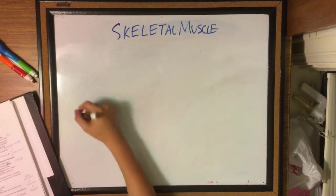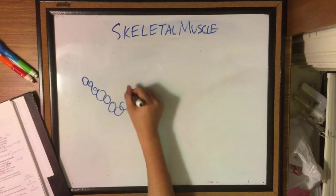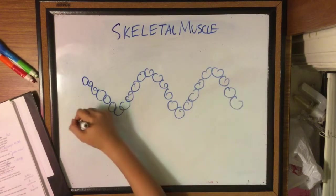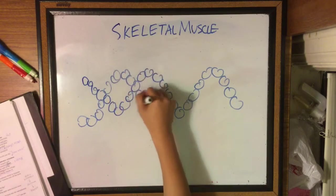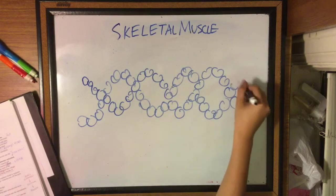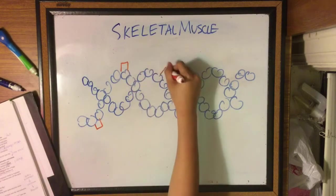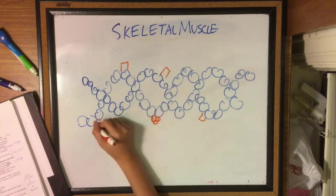Now begins the period of the crossbridge cycle which happens on the myofibrils, which contain thin and thick filaments. Thin filaments include actin, which has the binding site for myosin, and another thin filament is troponin.